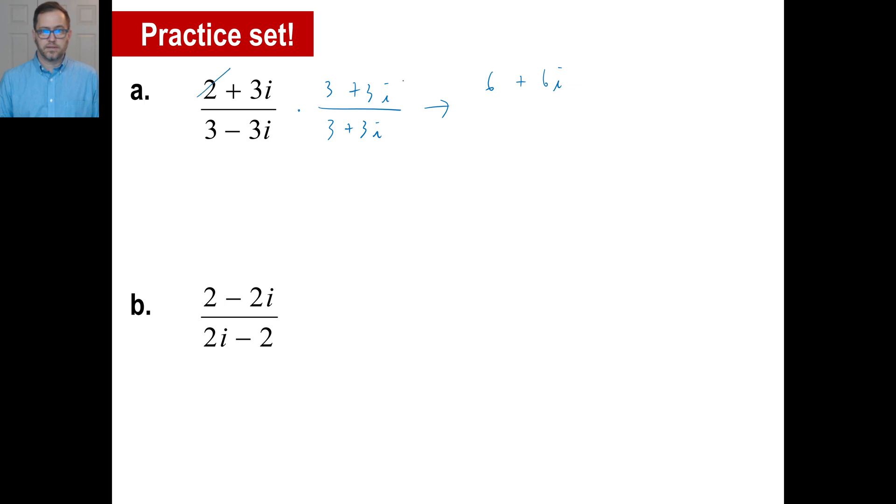3i times 3 is 9i. 3i times 3i is 9 times i squared, or 9 times negative 1, or negative 9. This one, of course, let's go ahead and just work on these two. 3 times 3 is 9. Then we have negative 3i times positive 3i. That will give us negative 9i squared. Negative 9 times i squared is negative 9 times negative 1, which is 9.